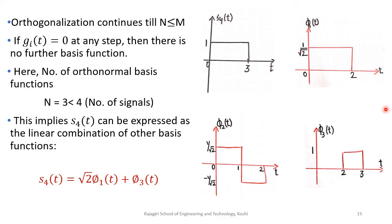Therefore we have derived the three basis functions φ1(t), φ2(t), and φ3(t), which can be used to represent the signals s1(t) through s4(t). We have discussed the Gram-Schmidt orthogonalization procedure, which can be used to find the set of orthonormal basis functions. Thank you.